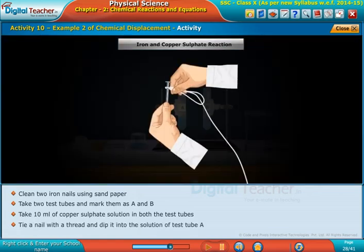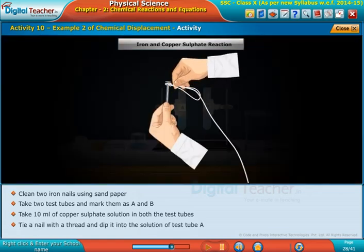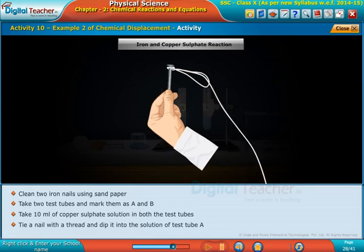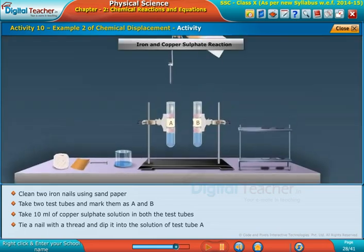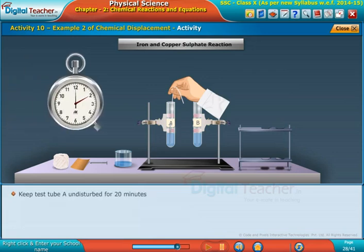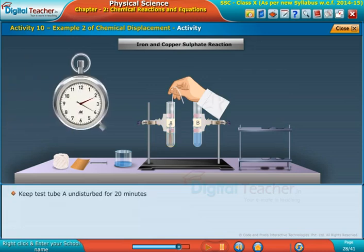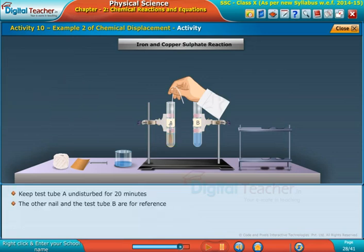Tie a nail with a thread and dip it into the solution of test tube A. Keep test tube A undisturbed for 20 minutes. The other nail and the test tube B are for reference.